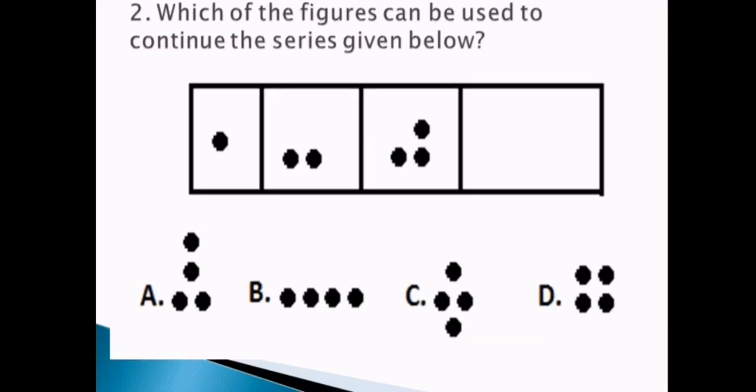Situation 2. Which of the figures can be used to continue the series? To notice, we have four columns. Column 1 have one dot. Column 2 have two dots. The second dot is nearer to the first dot. In third column, the third dot is closer to the second dot. Therefore, what would be the fourth column or the answer? A, B, C, or D? Our answer is letter D.